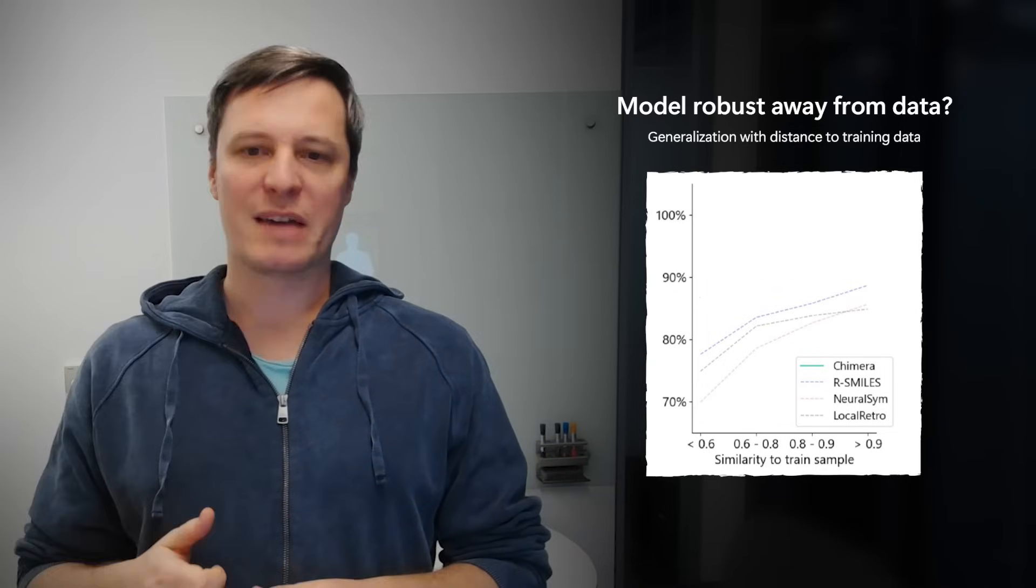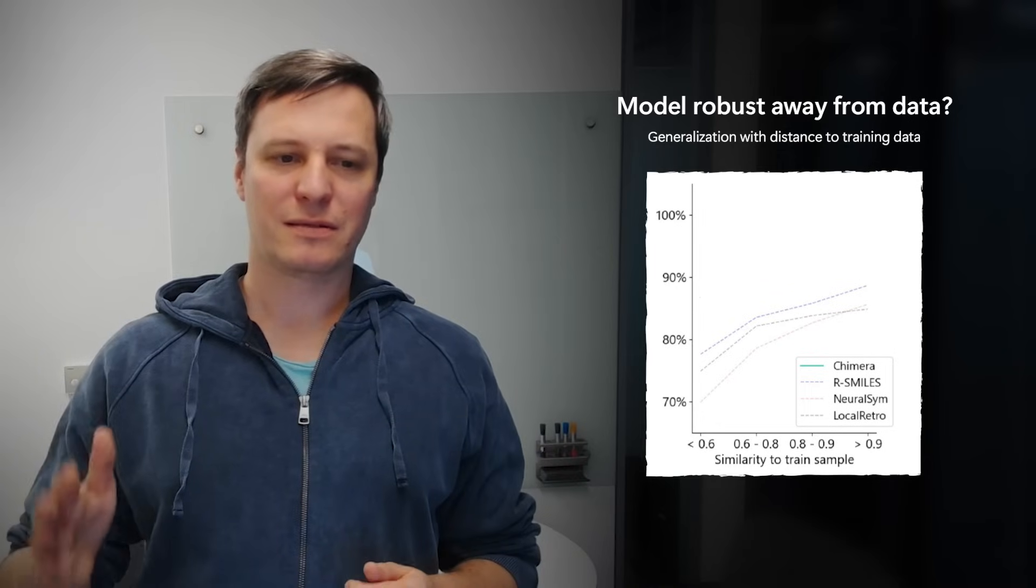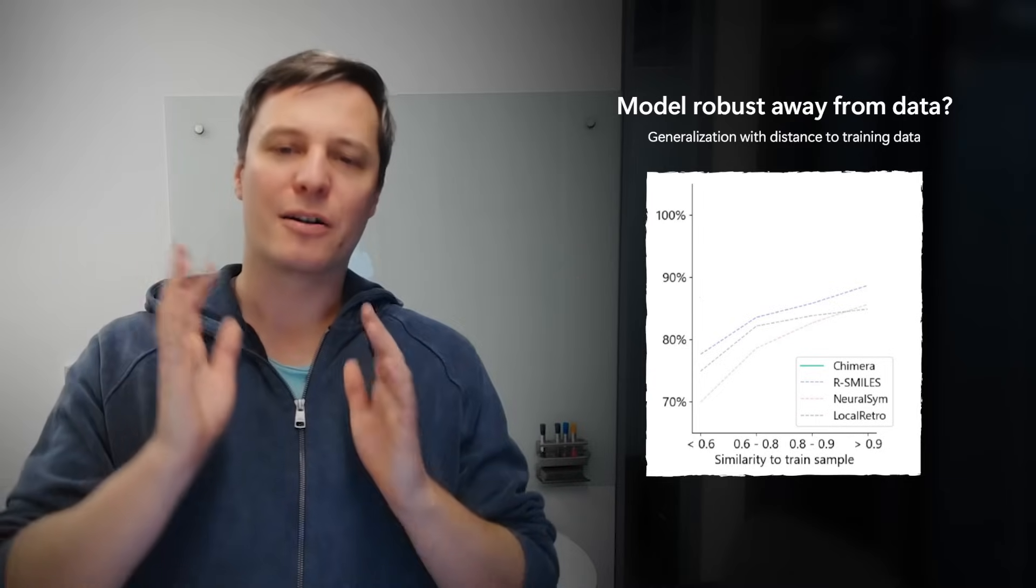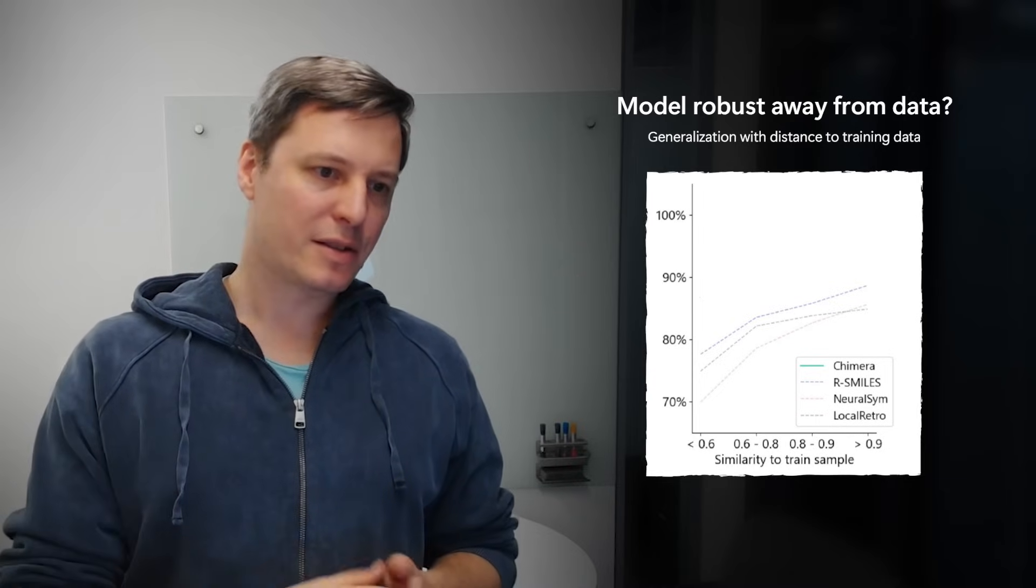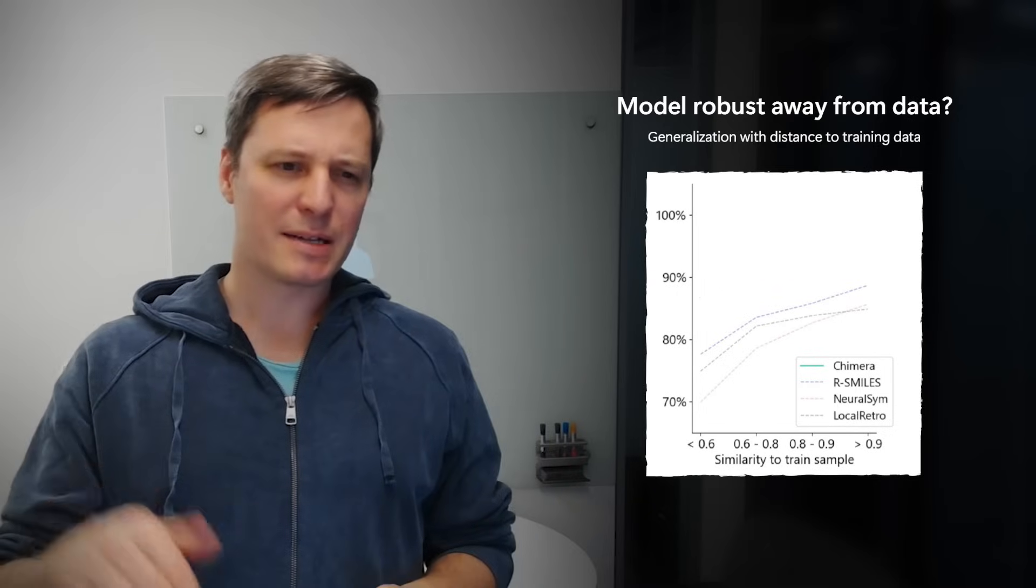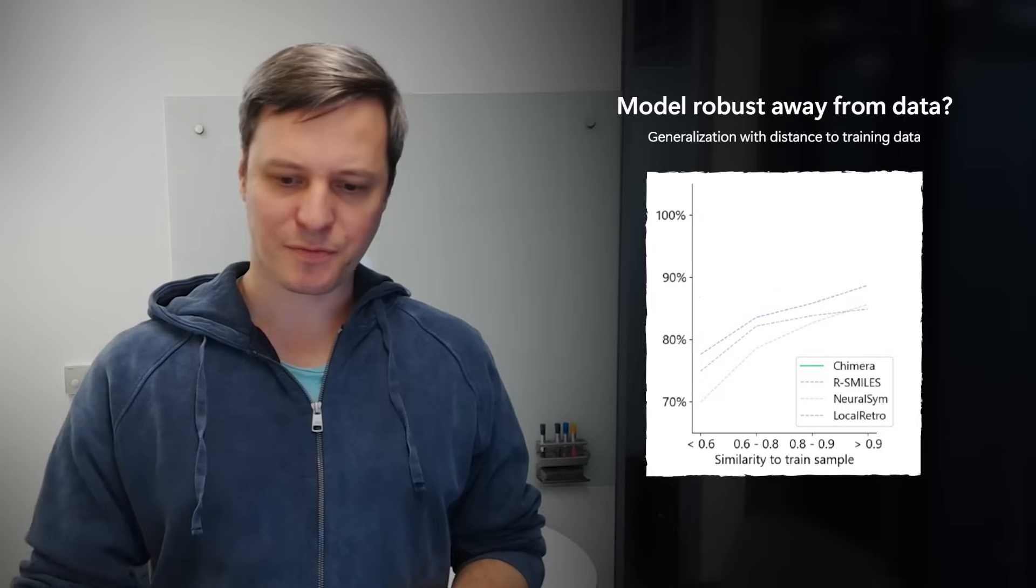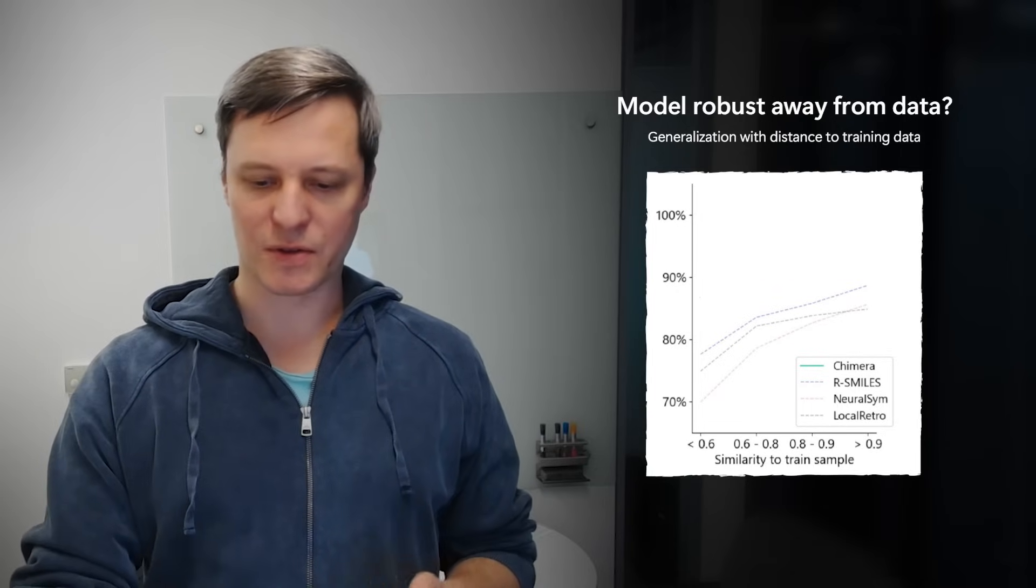And we can measure that by chemical similarity—how far the molecules in the test set are away from the training data. And the existing baselines, they drop off quite a bit.